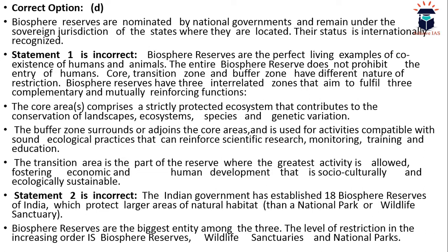In the transition area, economic and human development that is socio-culturally and ecologically significant is fostered. The Indian government has established 18 biosphere reserves, which protect larger areas of natural habitat than a national park or wildlife sanctuary — making them the biggest entity among the three. The level of restriction increases in this order: biosphere reserve has the lowest restriction, then wildlife sanctuaries, then national parks, which have the highest restriction.